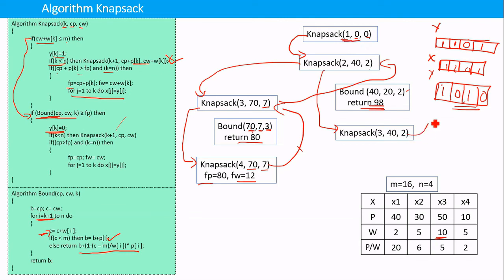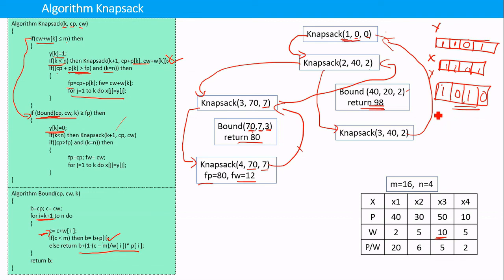This process repeats until we get the final answer. The recursive calls return and we check whether setting the first item to 0 gives a better profit — it does not. The final result is 1, 0, 1, 0. I recommend going through every step carefully so that you understand the algorithm very clearly.